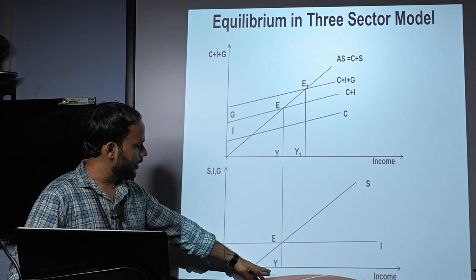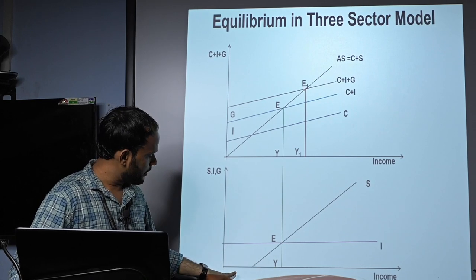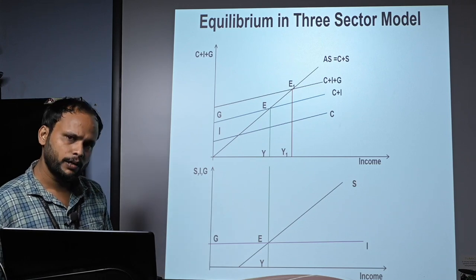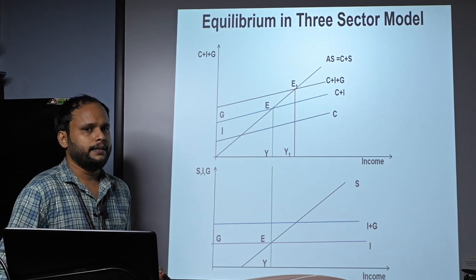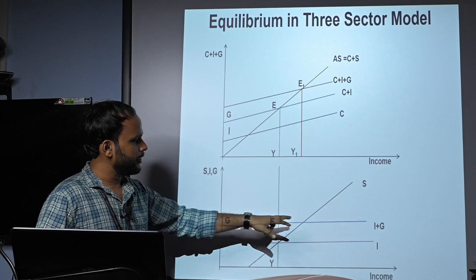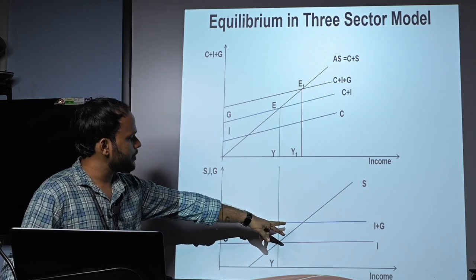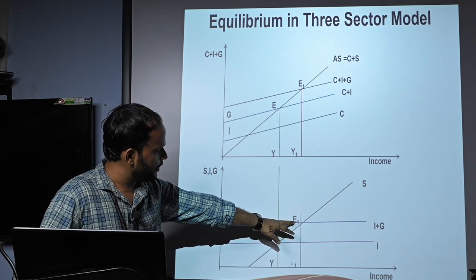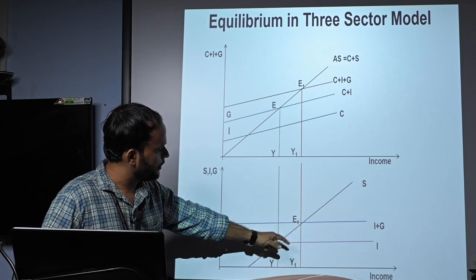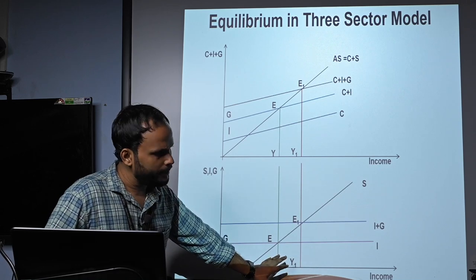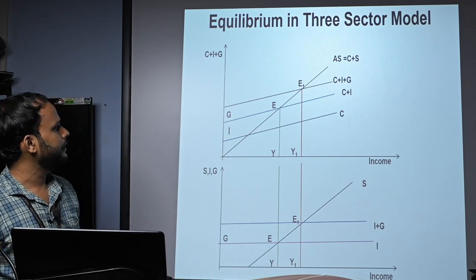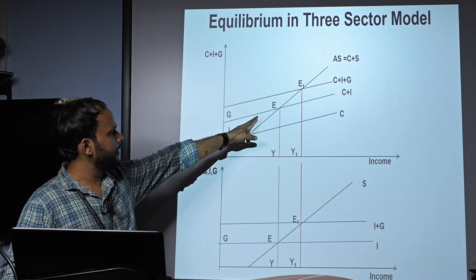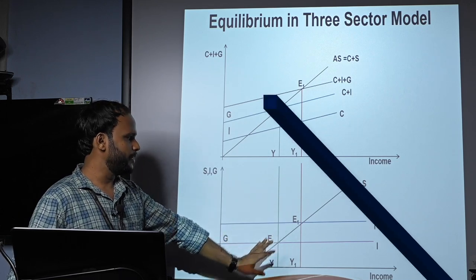The initial equilibrium in the two-sector model is where the saving and investment curves intersect, giving national income OY. Adding the government sector shifts the investment curve upward to I + G, and this new I + G curve intersects the saving curve at equilibrium point E1. The equilibrium level of national income in the three-sector model is OY1. So equilibrium in the three-sector model can be explained by equality between aggregate demand and aggregate supply, or by equality between savings and investment.